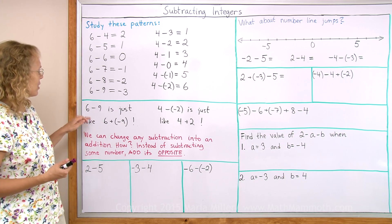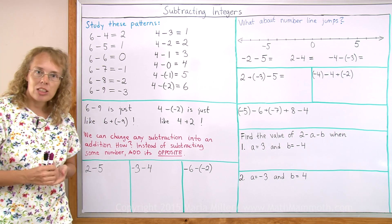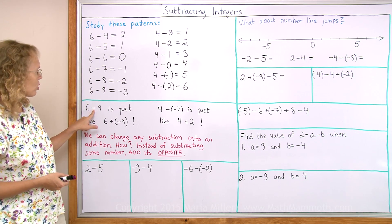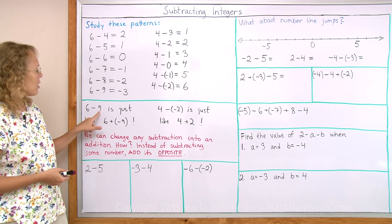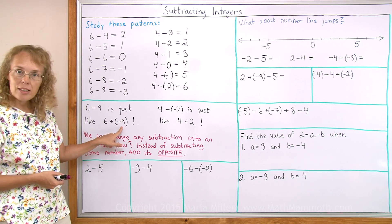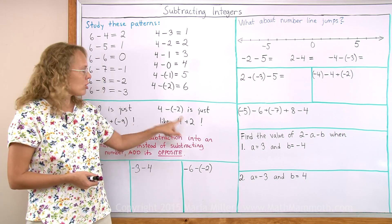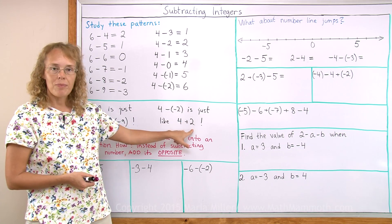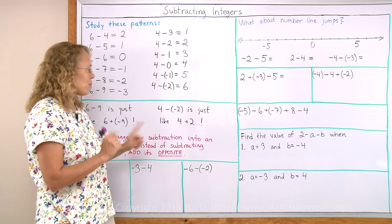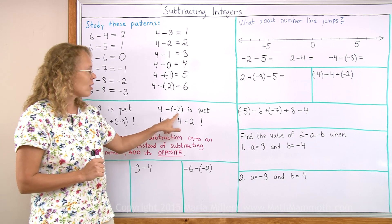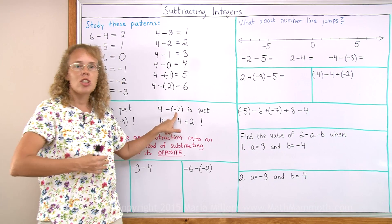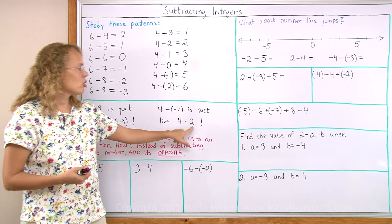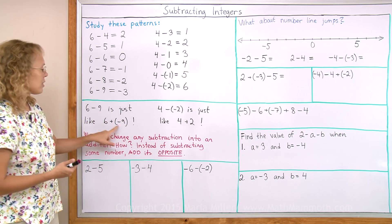And how do we do this? How do we change any subtraction into an addition? You can see here that the subtraction changes into addition and the 9 changed into negative 9. Over here, subtraction changed into addition and the negative 2 changed into 2. So two steps: the subtraction changes into addition, and then the number you're subtracting changes into its opposite. If it was a negative number you're subtracting, change it into the positive, and vice versa.